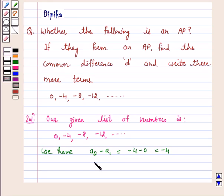Again, a₃ - a₂ is equal to -8 minus (-4), that is plus 4, which is equal to -4.